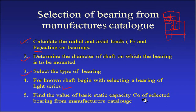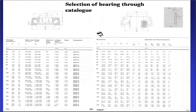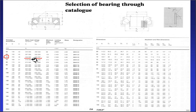Next, find the value of the basic static capacity C0 of the selected bearing from the manufacturer's catalog. For example, for a bore diameter of 70 mm, note the value of C0 (static load carrying capacity) from the catalog. You will then use this to find the dynamic load rating C using the load-life relationship.